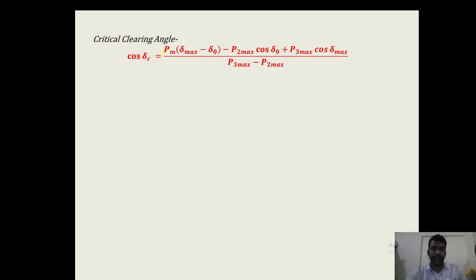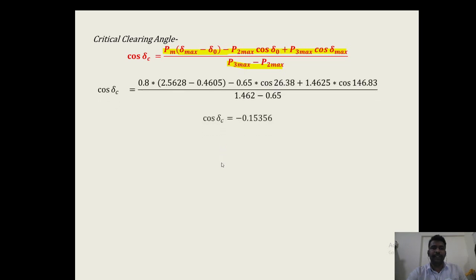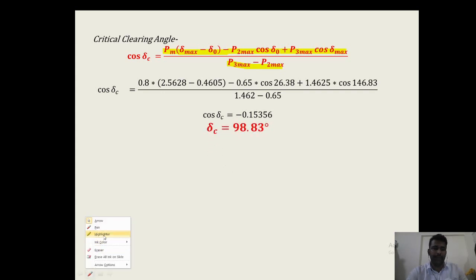The critical clearing angle formula is: cos(delta_C) = [Pm(delta_max − delta_0) − P2_max × cos(delta_0) + P3_max × cos(delta_max)] / (P3_max − P2_max). Substituting all calculated values, cos(delta_C) = −0.15356, giving delta_C = 98.83°. This is the critical clearing angle. We will now write the MATLAB program to verify these values.